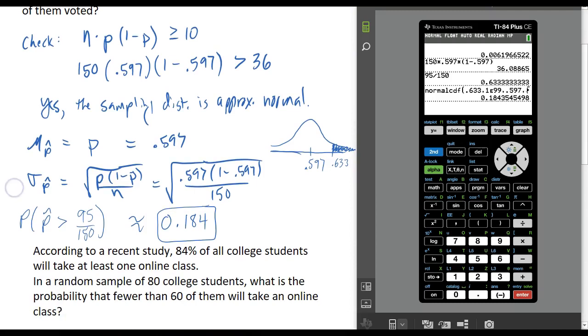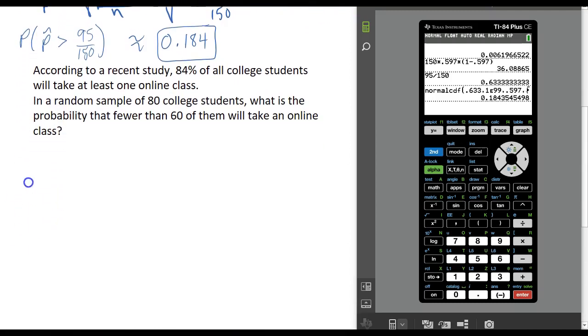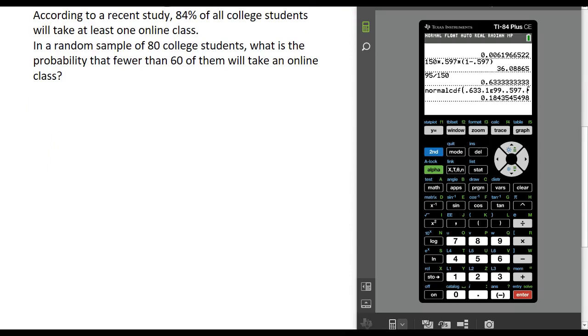Let's look at another example. According to a recent study, 84% of all college students will take at least one online class. In a random sample of 80 college students, what is the probability that fewer than 60 of them will take an online class?